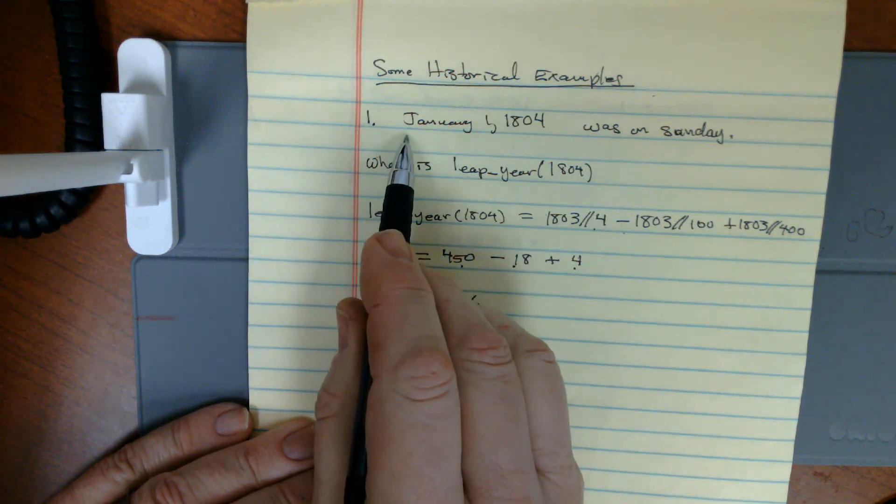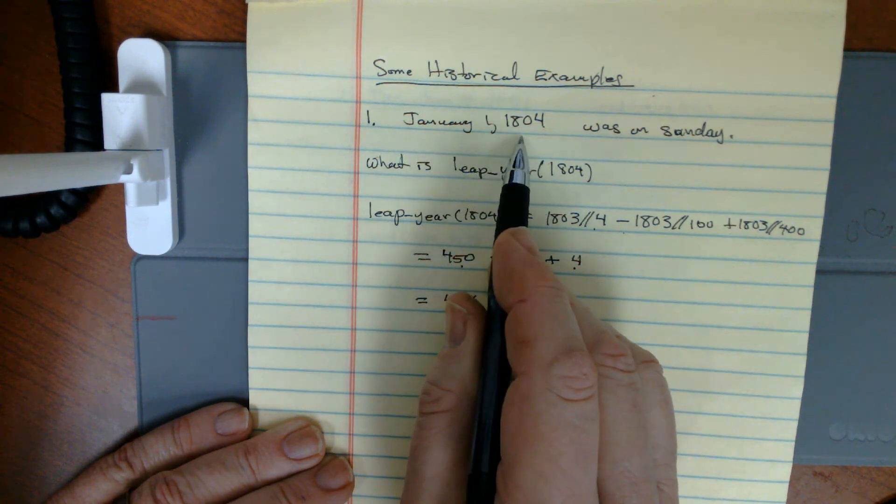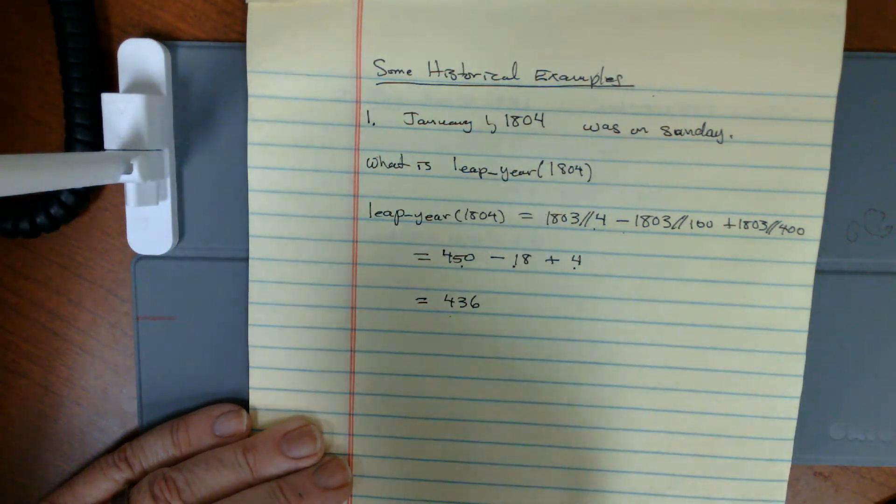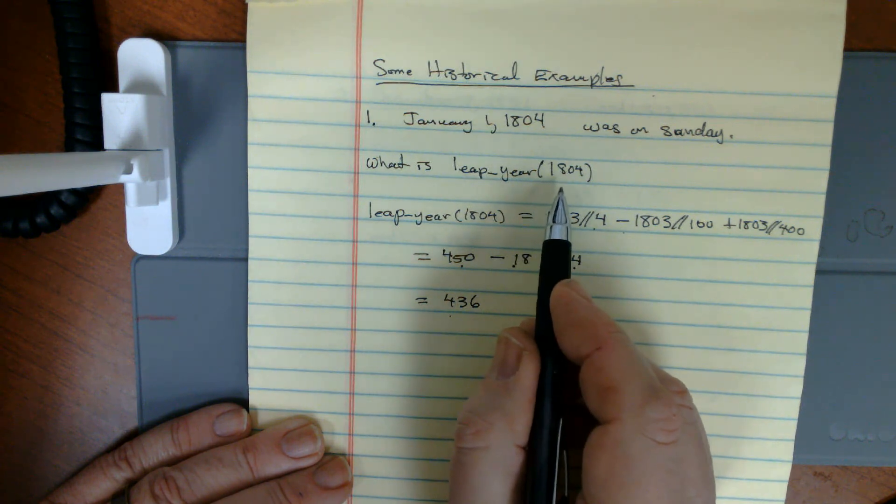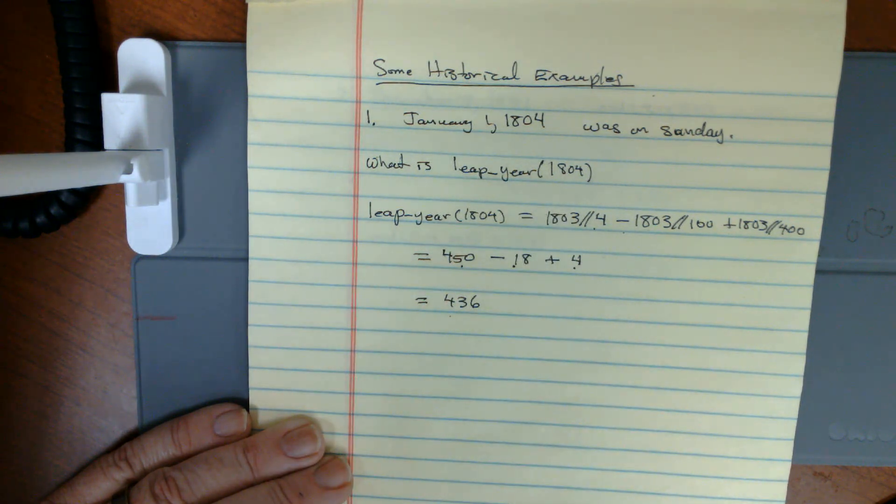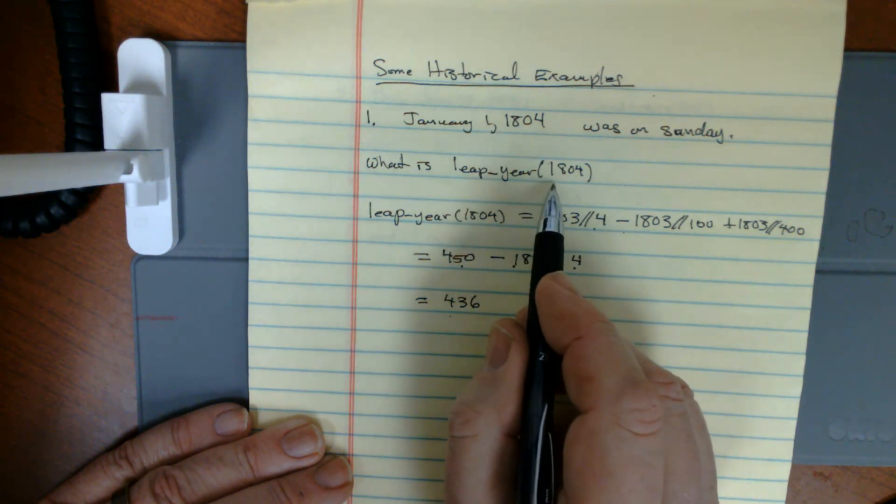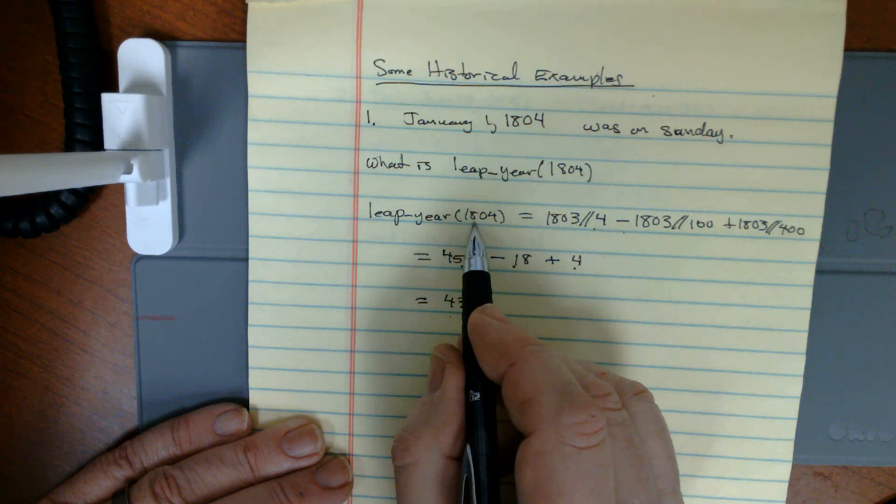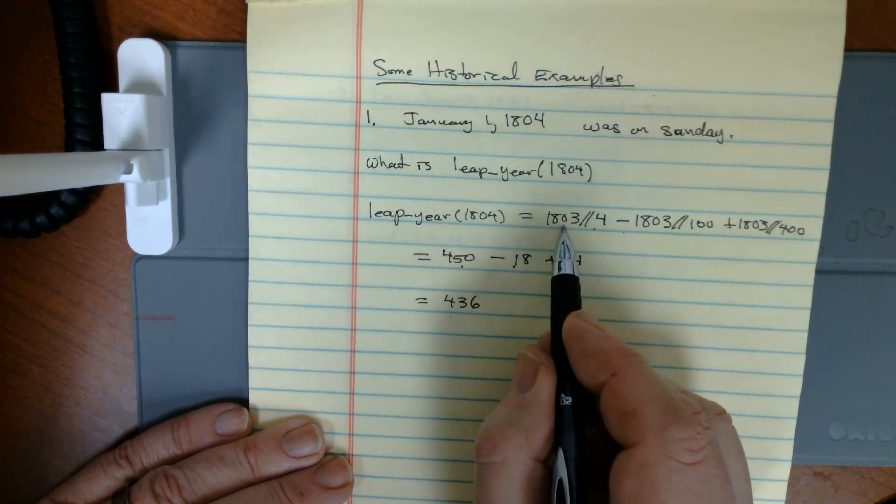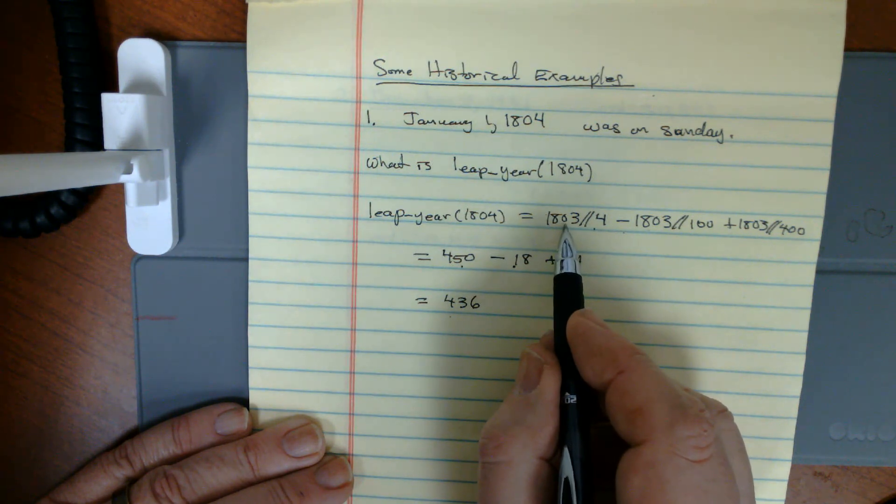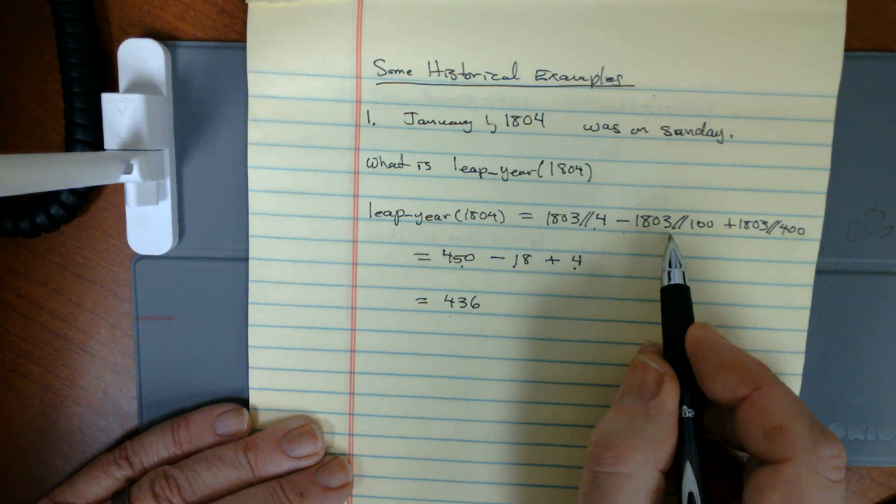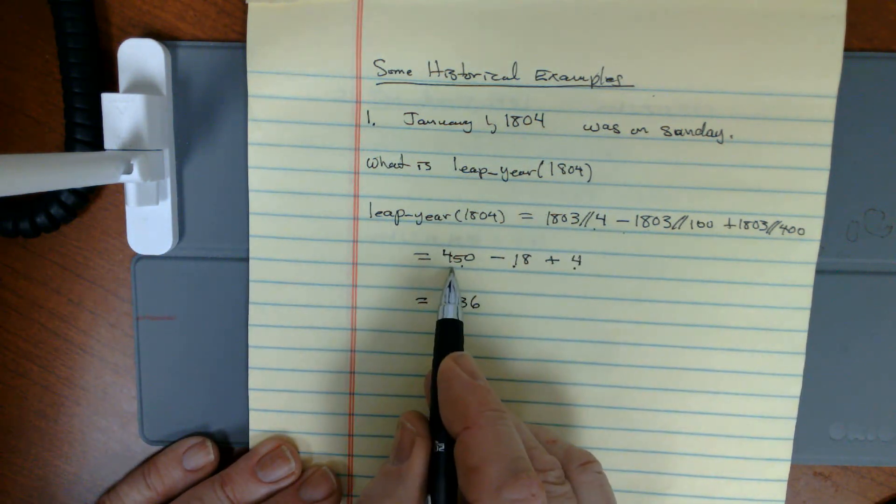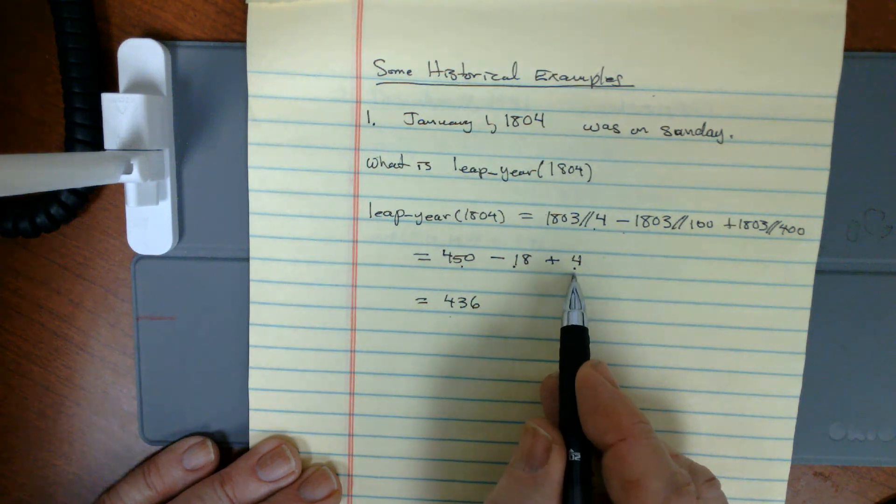Okay, our first example. January 1st, 1804, I'm going to be calculating this using this as my base for calculation. I'm going to calculate how many leap years occurred before that, how many Gregorian leap years occurred between the year 1 and before 1804. We have a leap year of 1804. We would have 1803 integer divided by 4, 1803 integer divided by 100, 1803 integer divided by 400. These give you 450, 18, and 4 respectively.